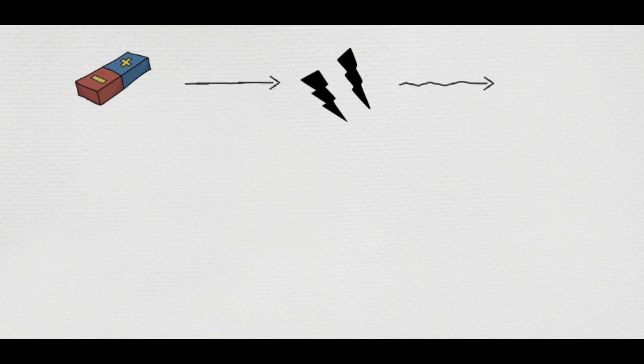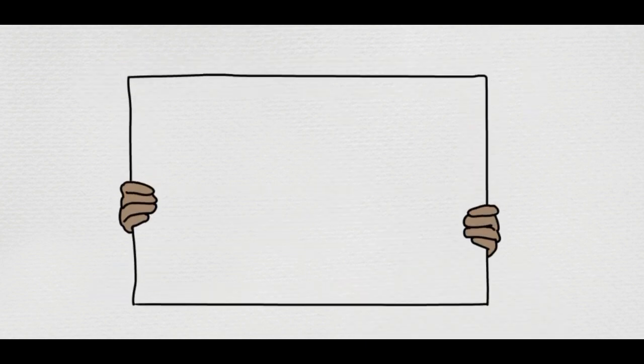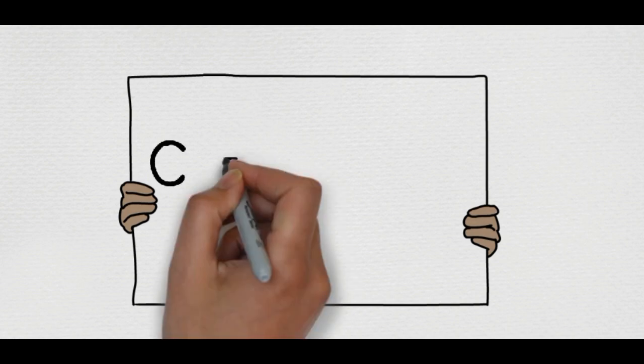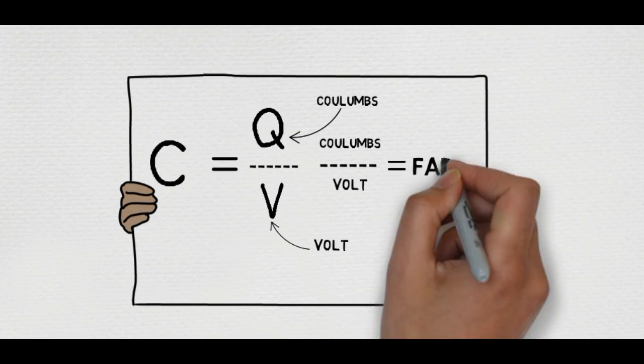Let a battery charge up a capacitor. Then the voltage across the capacitor will be same as the voltage of the battery. Looking at the formula C equals Q by V, Q stands for Coulombs and V for Volt. So Coulombs per Volt we call that a Farad.